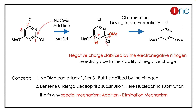Position 1 is stabilized extra by nitrogen and also has a leaving group, so the methoxide attacks there. An anion is formed, and this anion is stabilized by the electronegativity of nitrogen. Then the charge is quenched through double bond formation.